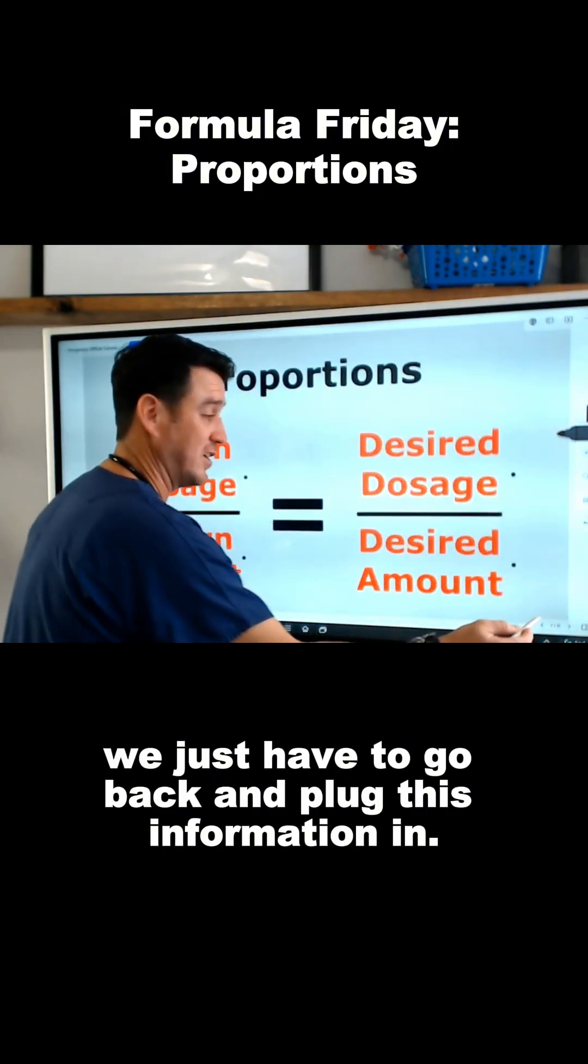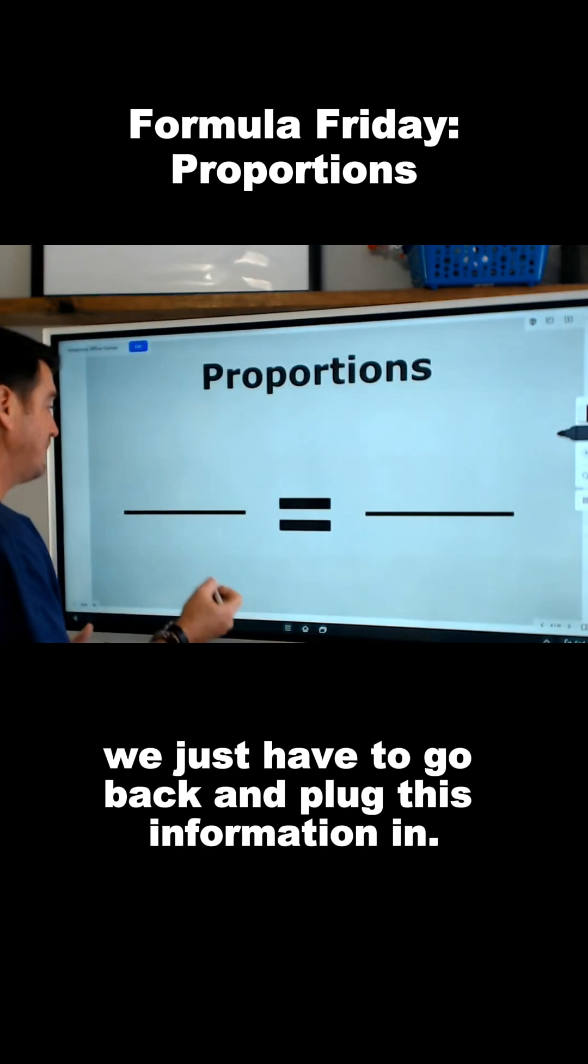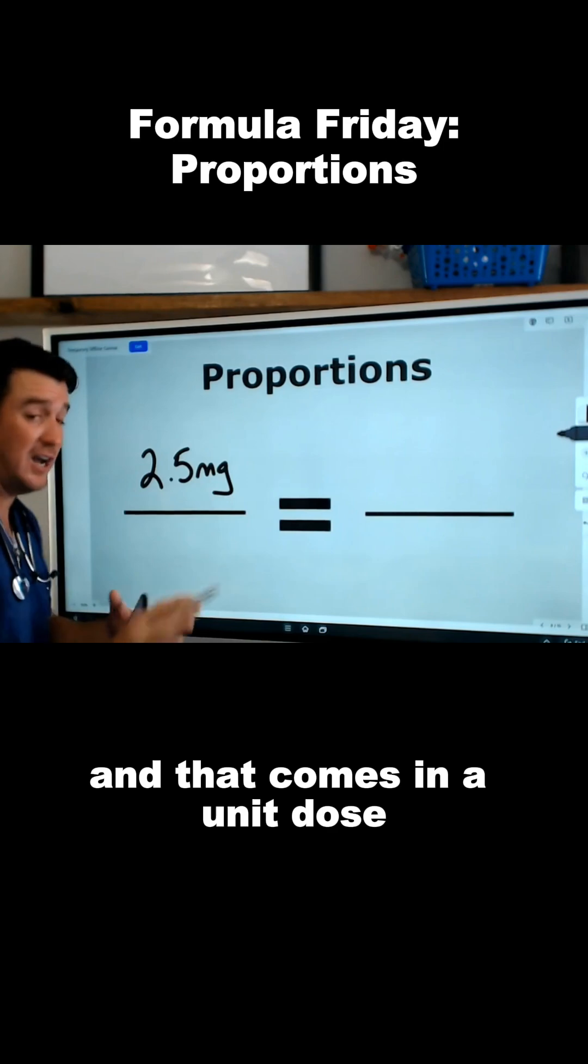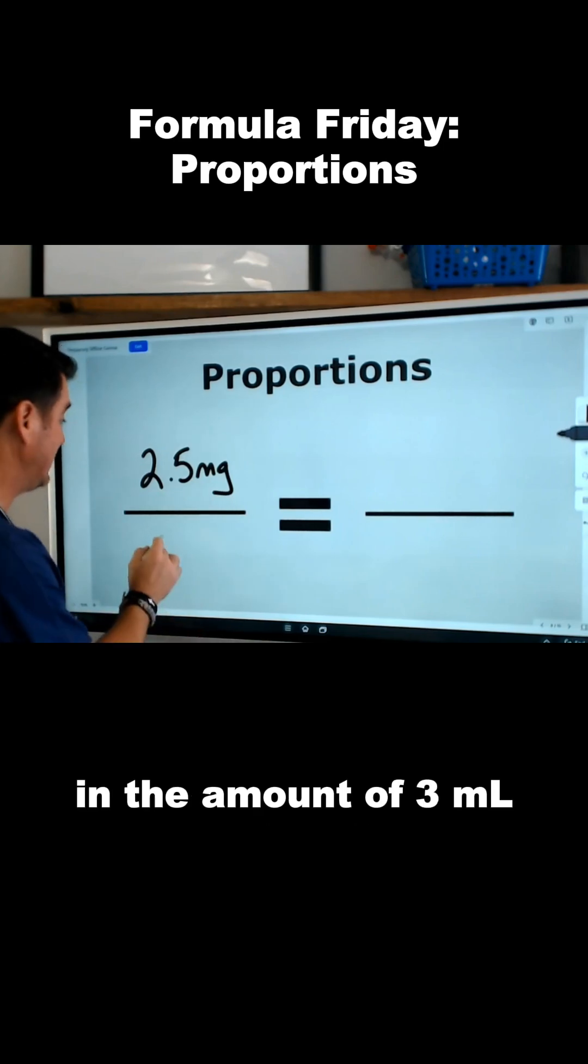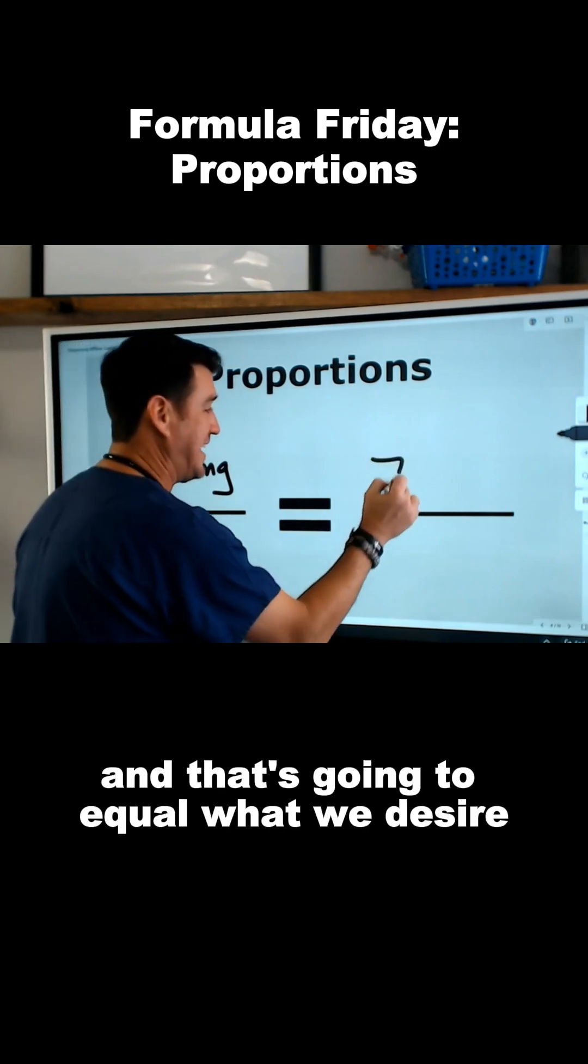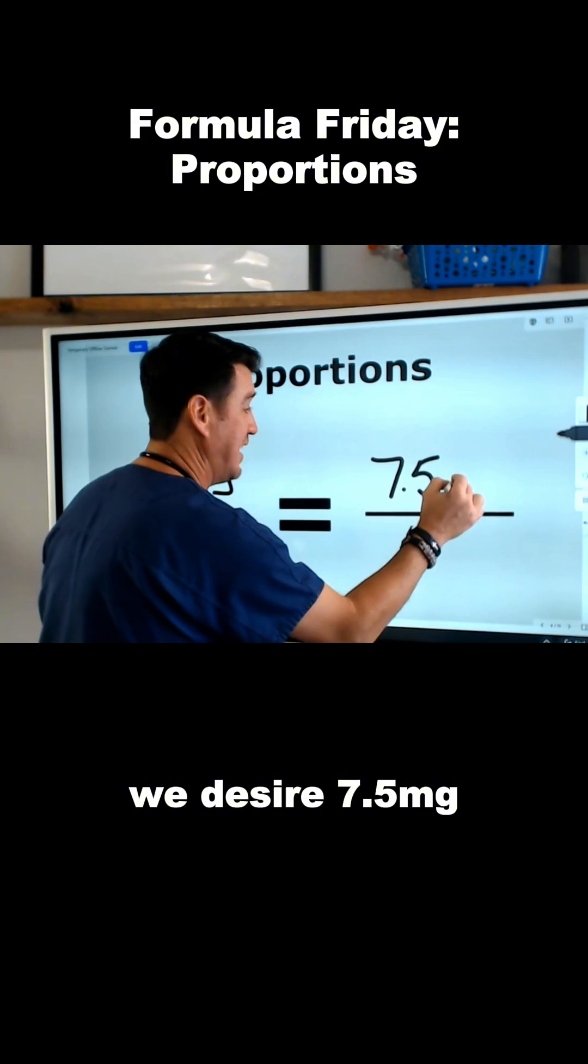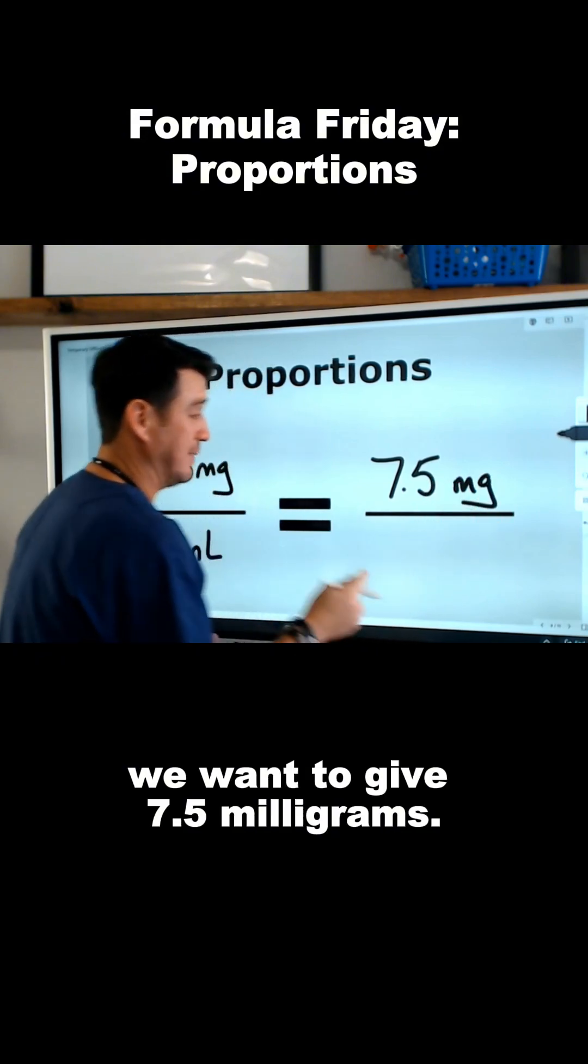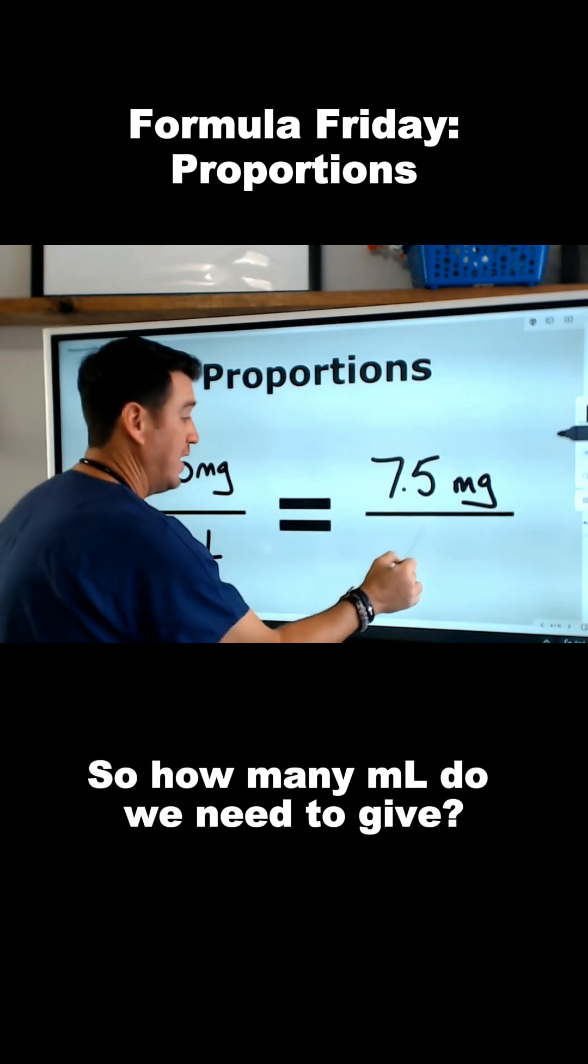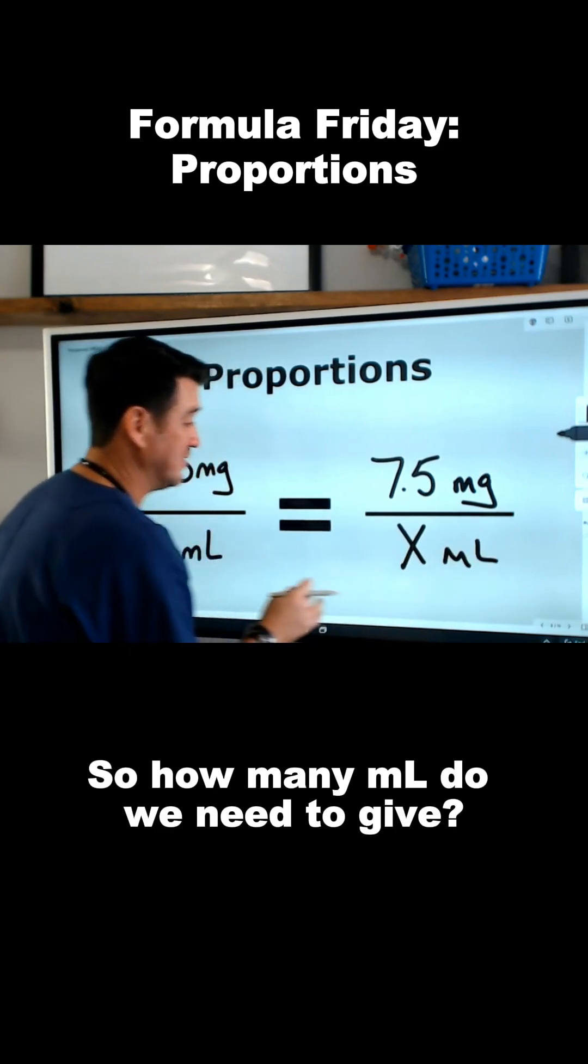So now we just have to go back and plug this information in. We know that we have 2.5 milligrams and that comes in a unit dose in the amount of 3 milliliters, and that's going to equal what we desire. We desire 7.5 milligrams. So how many milliliters do we need to give?